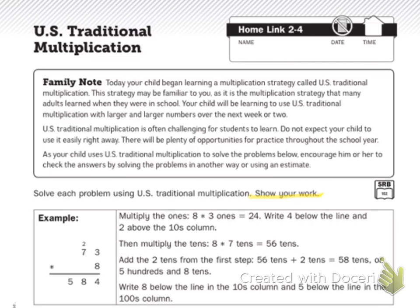So, your first step: multiply the ones — 8 times 3. So here we are, our ones. And that equals 24 ones. So you write the 4 here — here's my 4 — and then my 2 above. Write the 4 below the line and the 2 above the tens column. There's my 2.